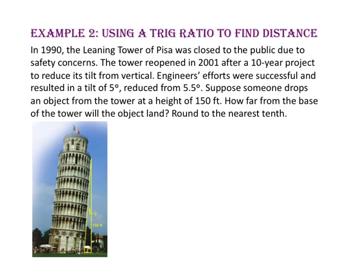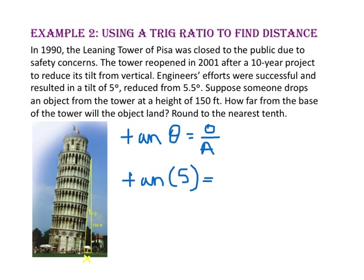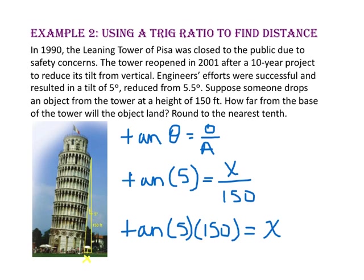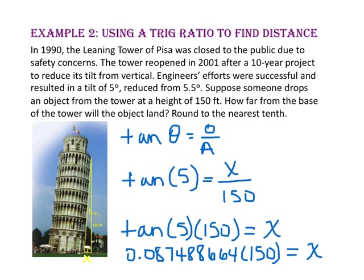Round to the nearest tenth. Since we know one of the acute angle measures of our right triangle, and we know the side length adjacent to that angle is 150 feet, we can use a trig ratio to find the distance from the base of the tower, X. Since we're looking for the side opposite and we know the side adjacent to our given angle, let's use tangent, since tangent equals opposite over adjacent. Substituting, we get tangent of 5 degrees equals X over 150. Since X is in the numerator, we multiply. Using a calculator, the tangent of 5 times 150 gives X approximately 13.1, meaning the object will land about 13.1 feet from the base of the tower.